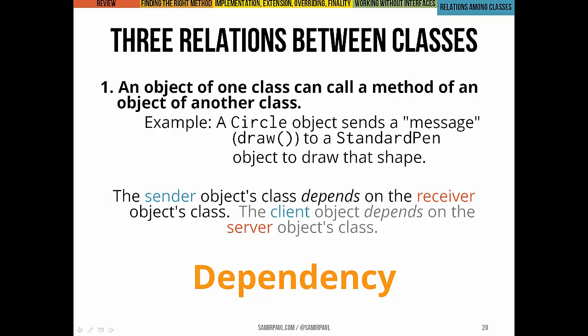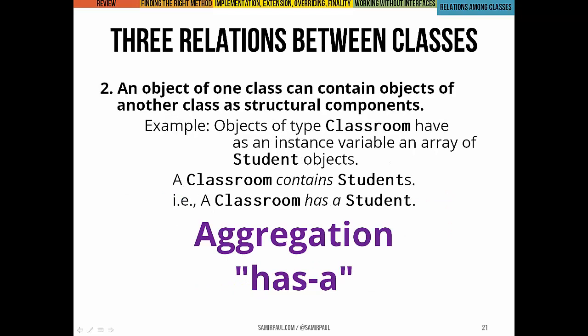Second, an object of one class can contain objects of another class as structural components. For example, a Classroom object might have an instance variable that is an array of Student objects — a classroom contains students. We often call this a has-a relationship. You could also think of this as an aggregation relationship.